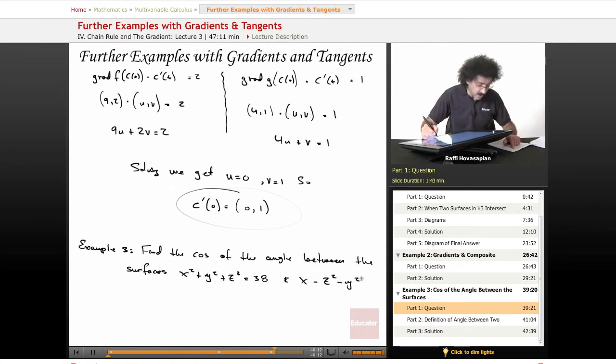Minus y squared equals minus 38 at the point (-1, 1, -6). Okay, let's make sure we write everything clearly, minus 1, 1, and minus 6. We're starting to get these stray lines again, so I'm going to move on to the next page after I finish writing this.